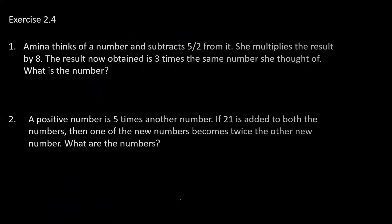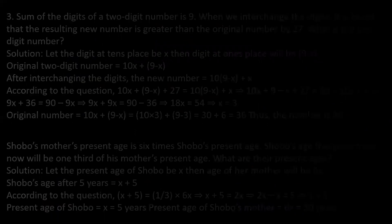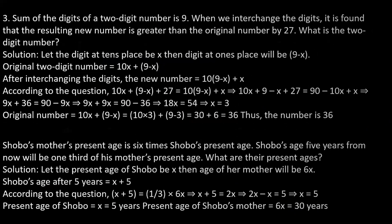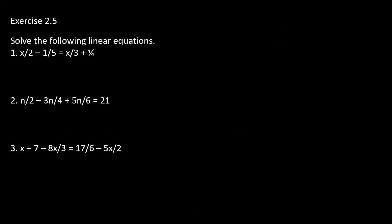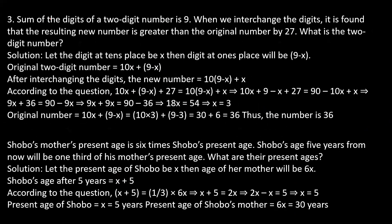Next question. Exercise 2.4, third question: Sum of the digits of a two-digit number is 9. When we interchange the digits, it is found that the resulting new number is greater than the original number by 27. What is the two-digit number?